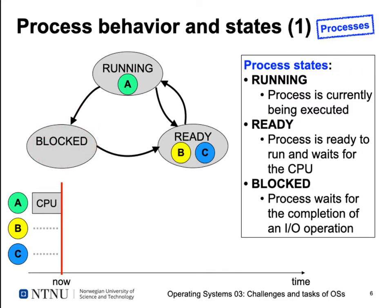Something else may restrict a process from running — this is the blocked state. Blocked means waiting for something other than the CPU. Even if the CPU became available, a blocked process still cannot execute because it needs data from something else, usually an I/O device, which is orders of magnitude slower than our CPU. If we are blocked, we're waiting for the completion of an I/O operation.